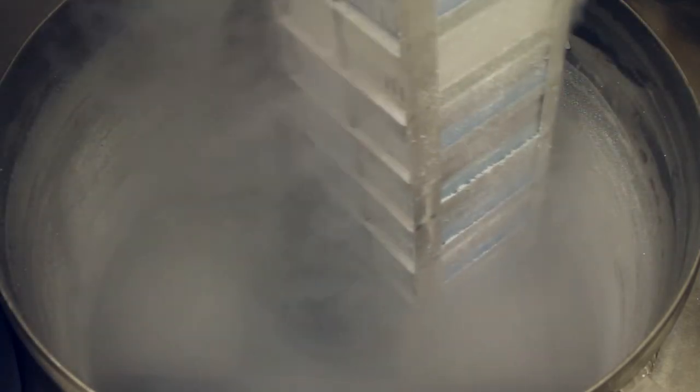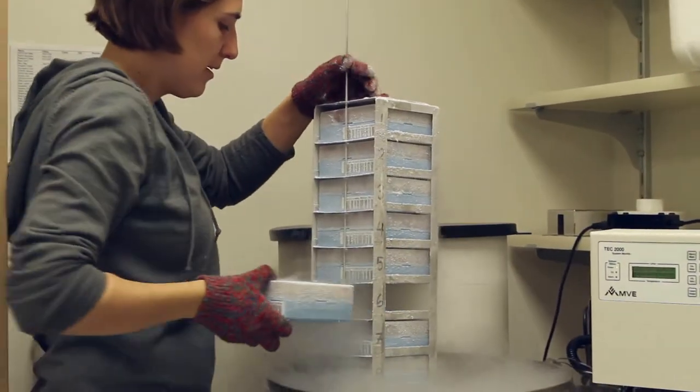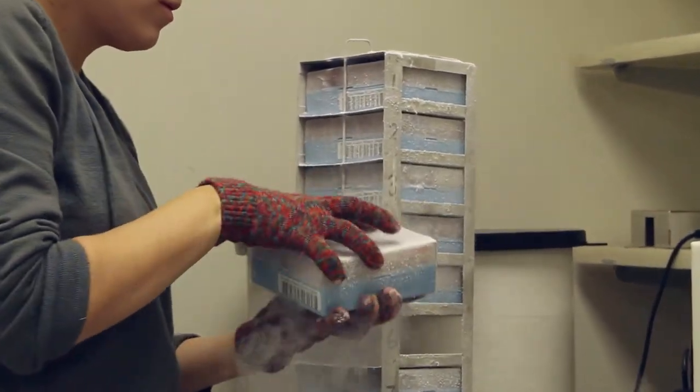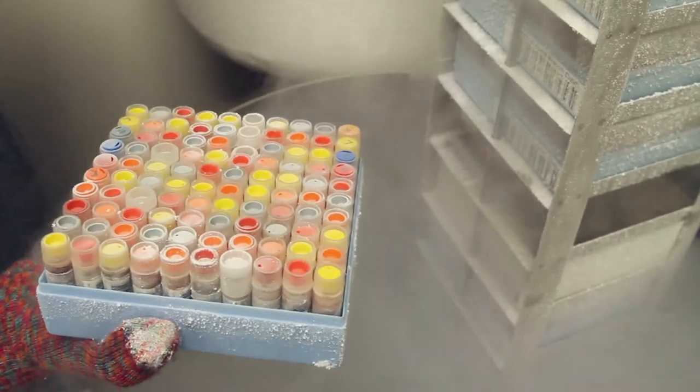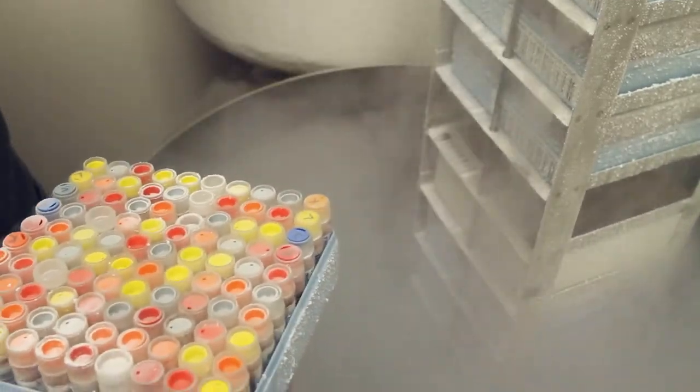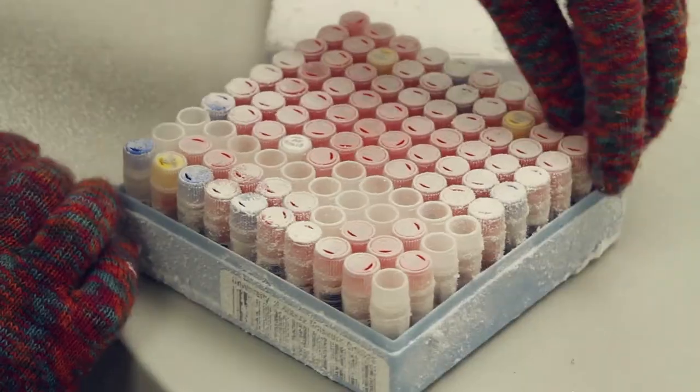When cells die, they automatically start to break down. There's enzymes that start to shear the DNA, break down the tissue walls, and just destroy the entire cell. The idea of deep freezing is that we can actually stop the enzymes from breaking down the cell.